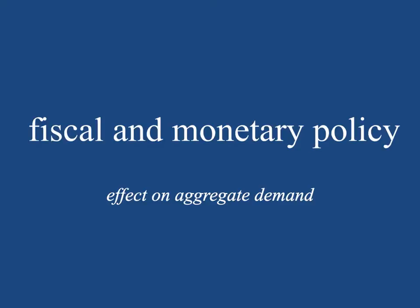Fiscal policy: taxing and spending. Monetary policy: the money supply and interest rates. Interest rates are basically the price of borrowing money. And of course, the government is who issues money, so they are the ones who are able to decide the price of borrowing it. Fiscal and monetary policy are the two tools the government has in order to parent the economy.